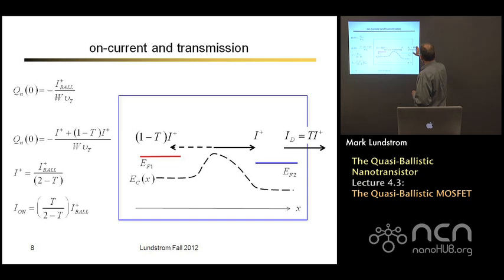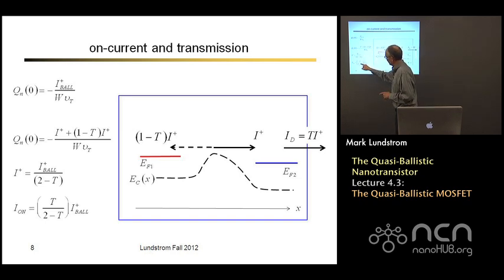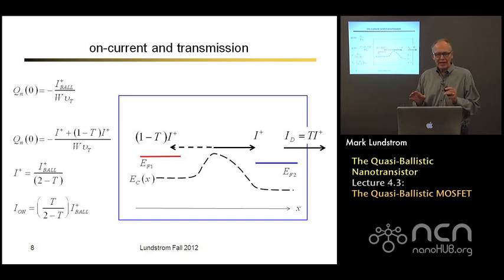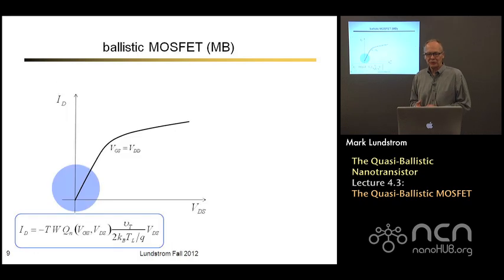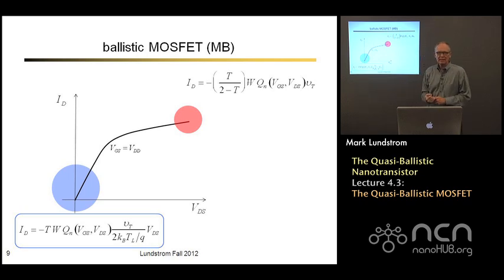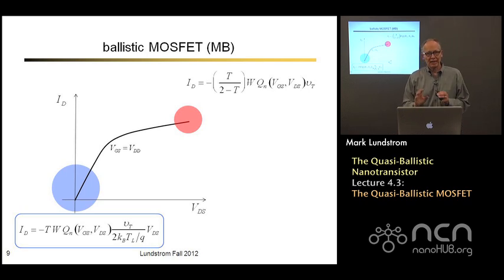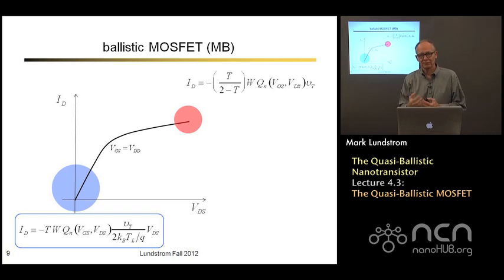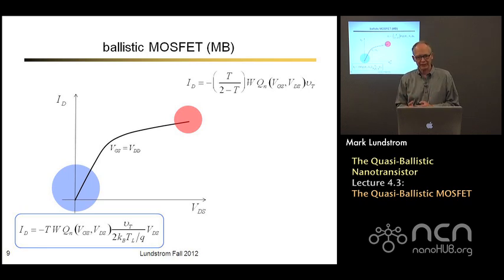The on-current is transmission times the positive flux, so it's T over (2 minus T) times the ballistic flux. I have to be careful about this bookkeeping: under high drain bias I don't simply multiply my ballistic expression by T, I multiply it by T divided by (2 minus T). That's a consequence of the self-consistent MOS electrostatics that maintains the constancy of the inversion layer density at the top of the barrier, whether or not there is scattering.